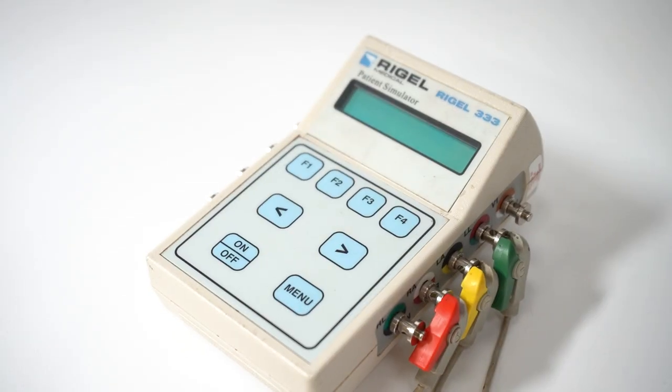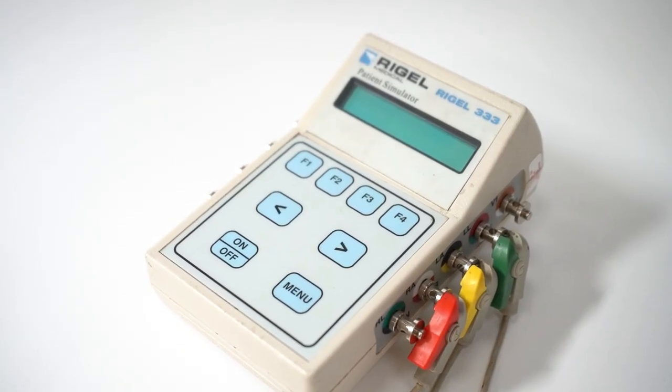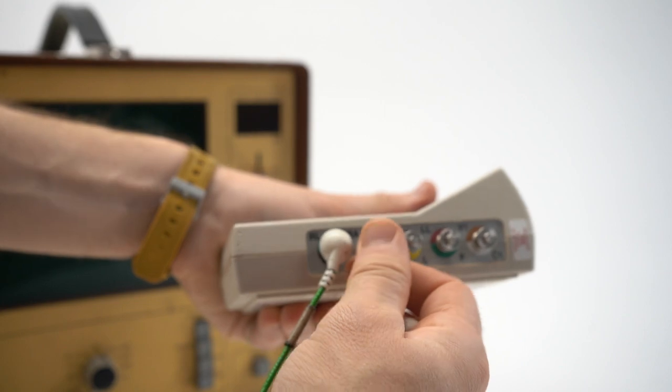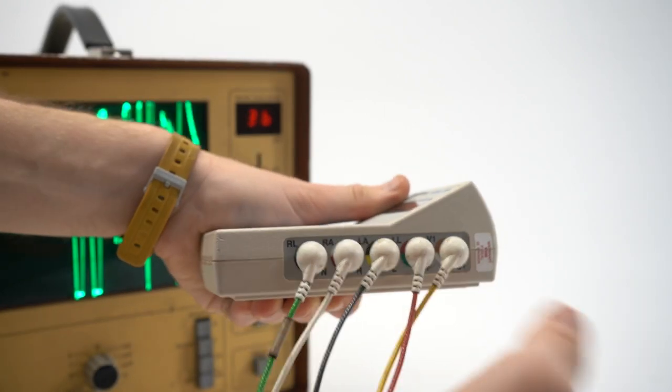You'll receive a control box like this with the monitor. To connect the simulator to the machine, attach these wires to the nodes corresponding to the colour on the top half.